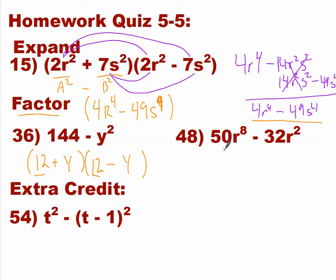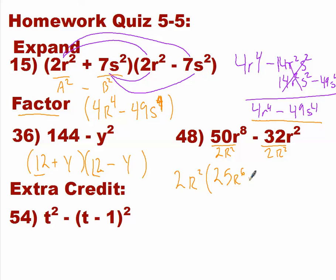Is there a term that goes into 50r to the eighth and 32r squared — something that both share? Yes. They both share 2r squared. Remember, when you factor out a greatest common monomial, it gets kicked out to the curb. So we have 2r squared, and we're going to divide both terms by 2r squared. So 50r to the eighth divided by 2r squared is 25r to the sixth. Is 25 a perfect square? Yes. Is r to the sixth a perfect square? Yes. And 32 divided by 2 is 16 — that's a perfect square.